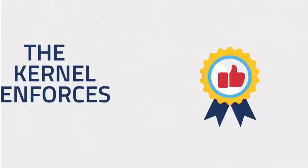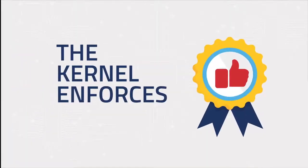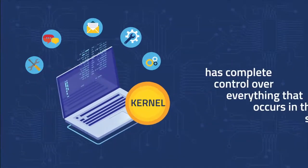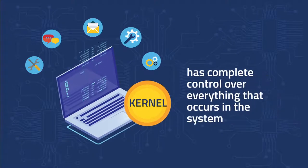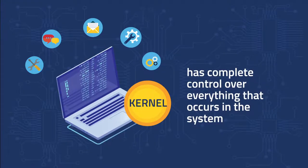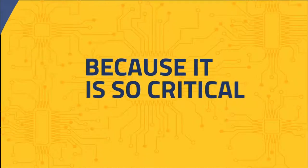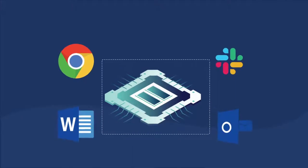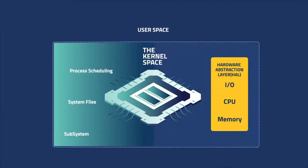It also enforces privileges and security policies. At the lowest level of the OS, the kernel has complete control over everything that occurs in the system. Because it is so critical, the kernel code is kept in a protected area of the OS where it cannot be accidentally overwritten. This is known as the kernel space.